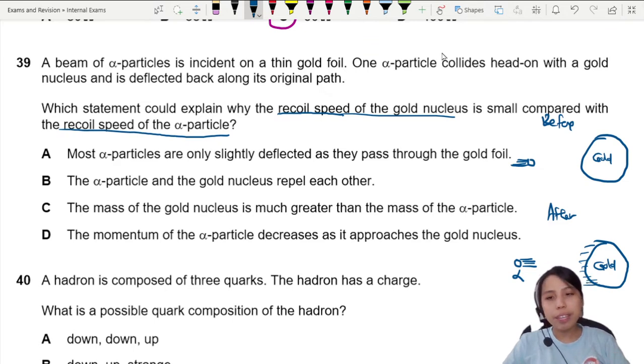The gold nucleus is probably much heavier, right? So how do we compare that? Who's going to have more recoil speed?